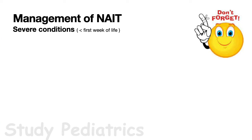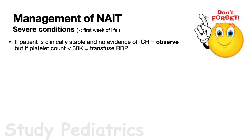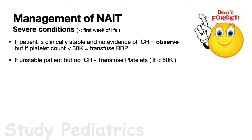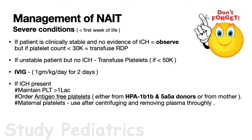In management of NAIT: in severe thrombocytopenia during the first week, if the patient is clinically stable with no evidence of ICH, observe; if platelet count is less than 30,000, transfuse RDP. If the patient is unstable with no ICH, transfuse platelets if count is less than 50,000, and give IVIG 1 gram/kg/day for 2 days. If ICH is present, maintain platelet count above 100,000, order cross-matched antigen-free platelets from HPA-1b1b and 5a5a donors or from the mother. Maternal platelets are used after centrifuging and removing plasma. Methylprednisolone (MPS) at 1 mg/kg BD for 3–5 days may be used in non-responders.